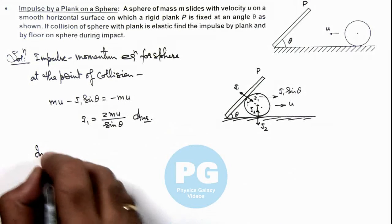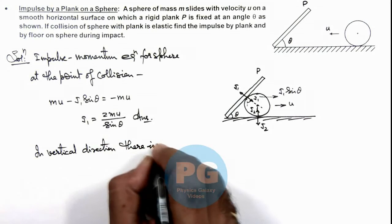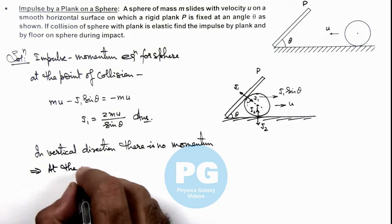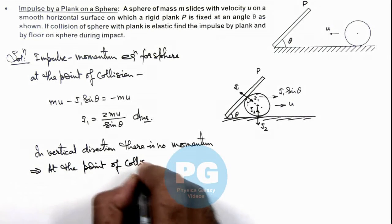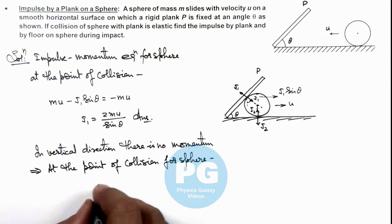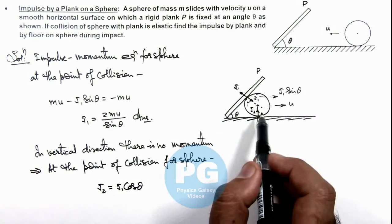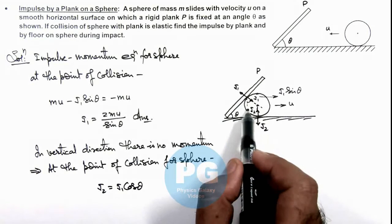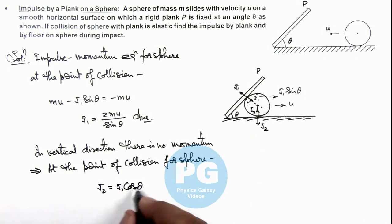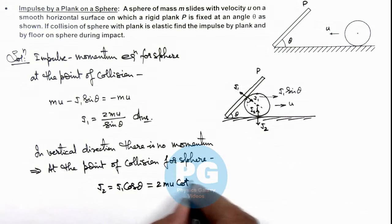In the vertical direction, there is no change in momentum. This implies that at the point of collision, for the sphere, the upward impulse is J2. The downward impulse component from the plank on the sphere is J1·cos(theta), and since the sphere attains no vertical momentum, this must be compensated by the impulse from the ground on the sphere. So we can write J2 = J1·cos(theta). Substituting the value of J1, this equals 2mu·cot(theta). That is the second answer for this problem.